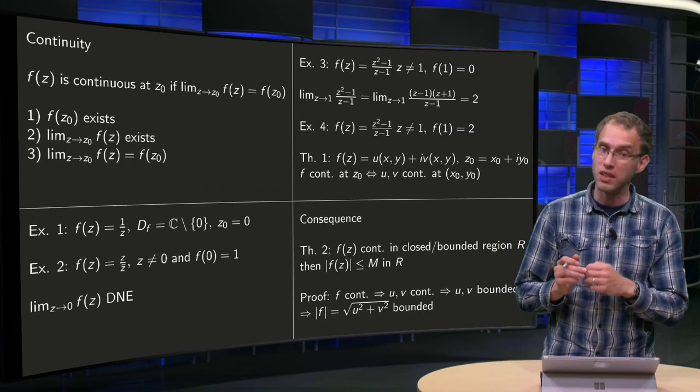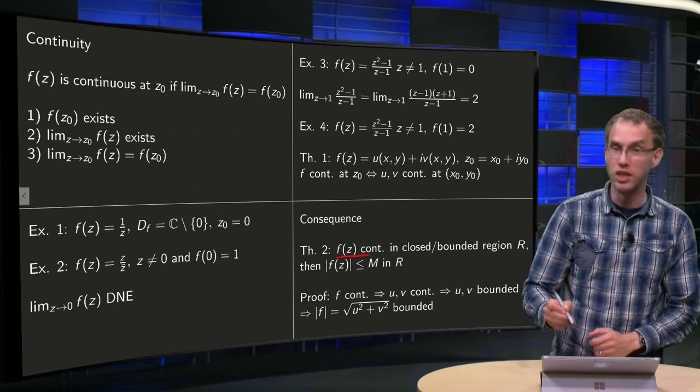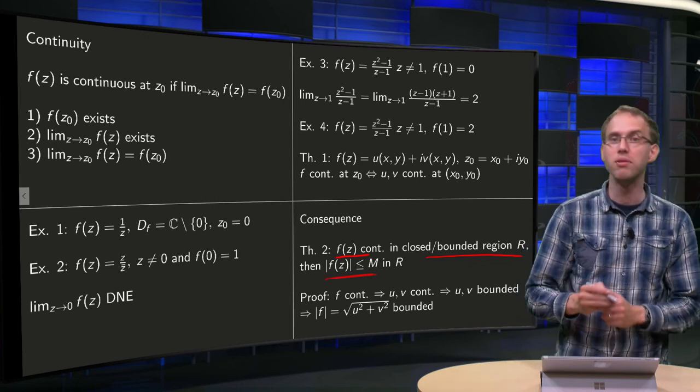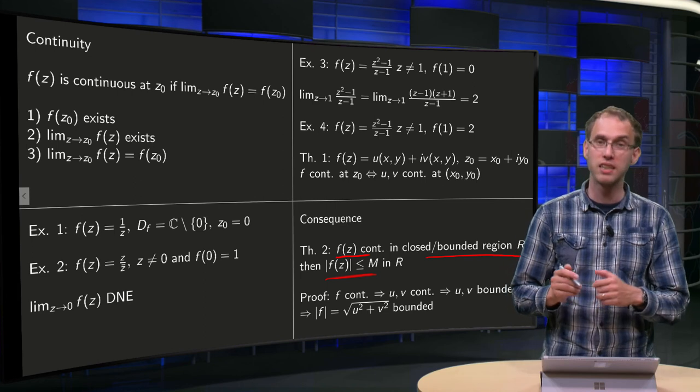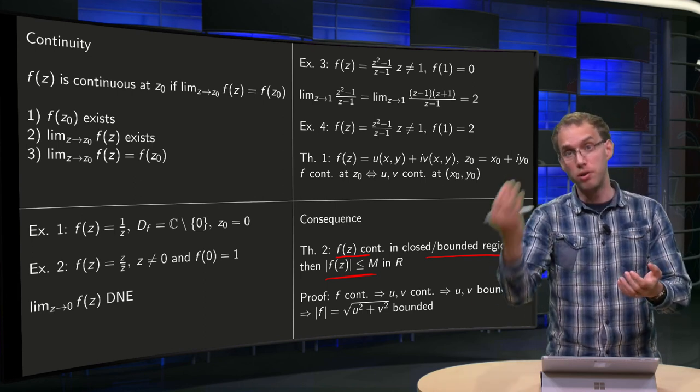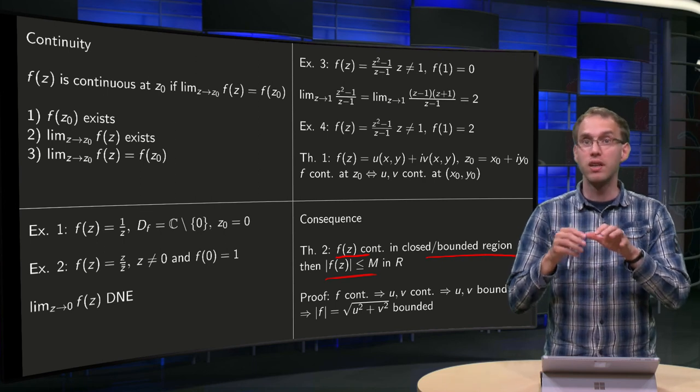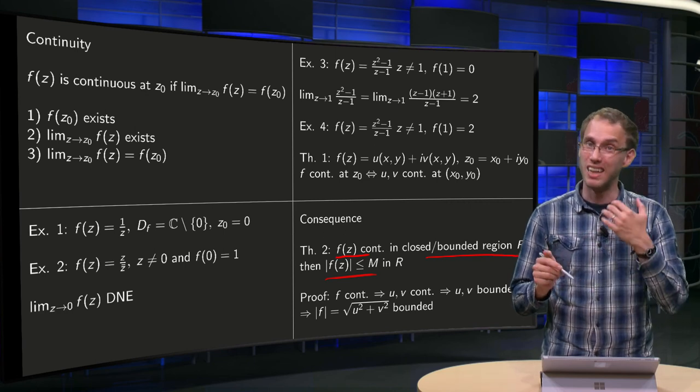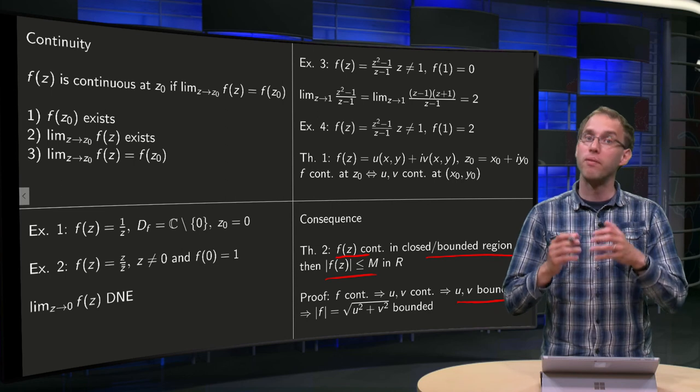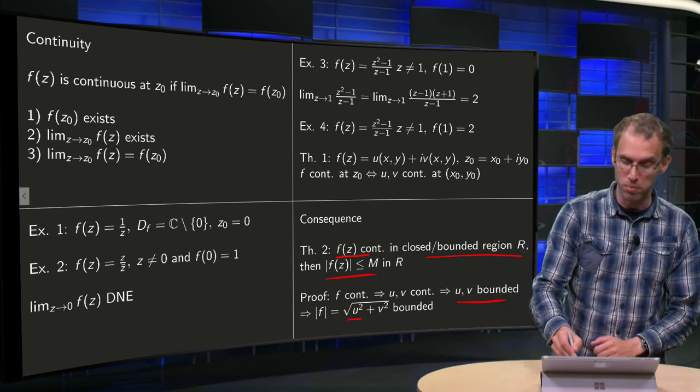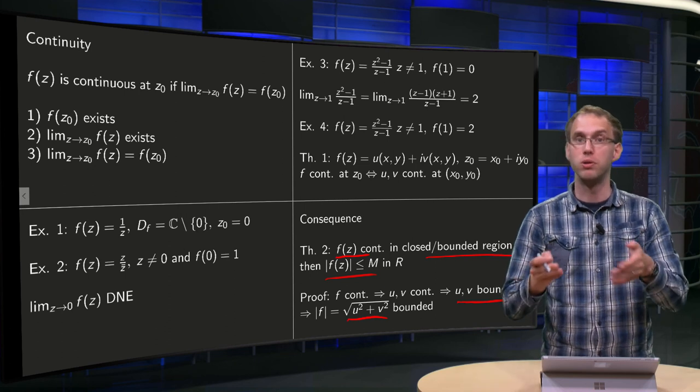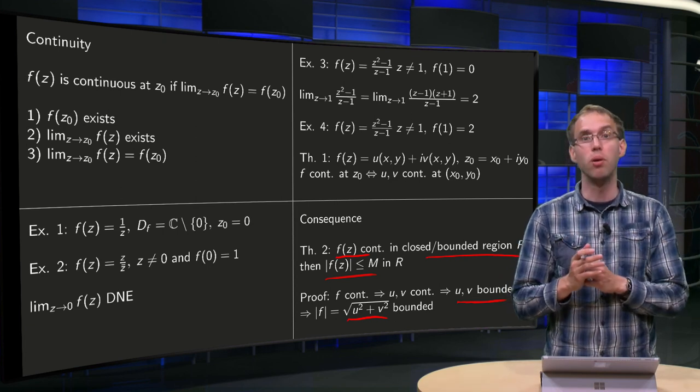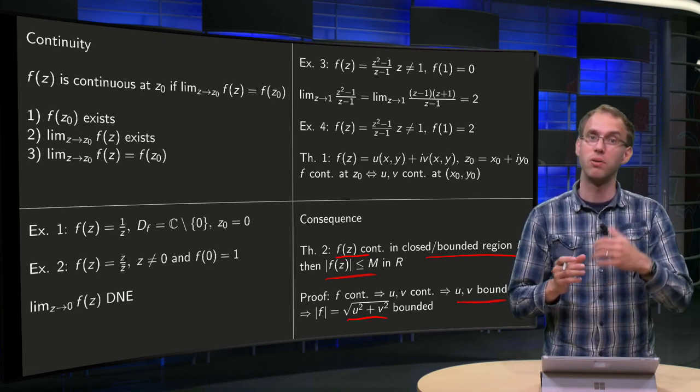This is a very nice consequence, a second theorem. It says if f(z) is continuous in some closed bounded region R, then f(z) is bounded in this region R. Why is that? If f is continuous, then both u and v are continuous. For u and v continuous on a closed bounded region R, you have a theorem which says that u and v are bounded. The norm of f(z) is the square root of u² + v². So u and v are bounded, so u² and v² are bounded, the sum is bounded, and the square root of the sum is bounded as well. So the norm of f(z) is bounded, so f(z) is bounded as well.